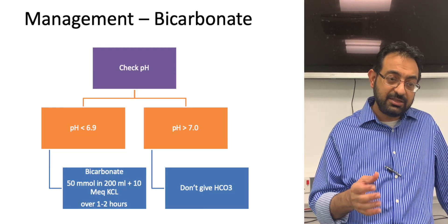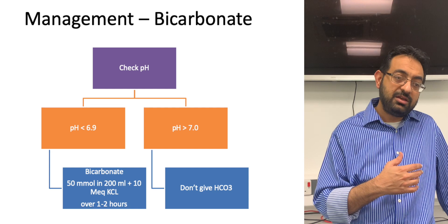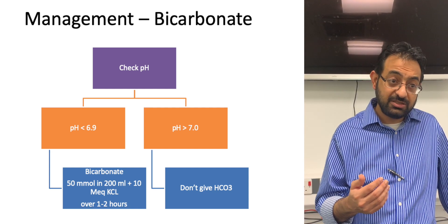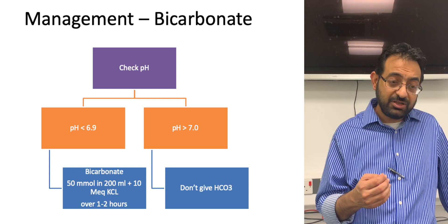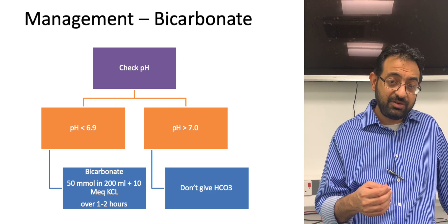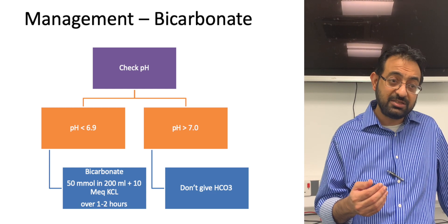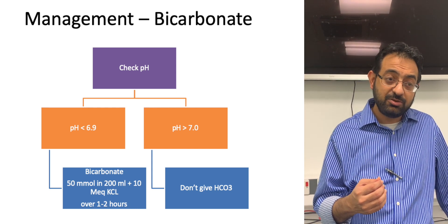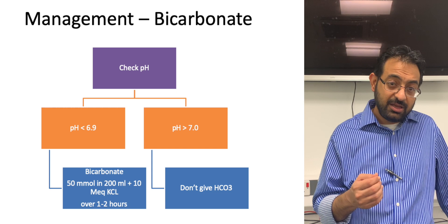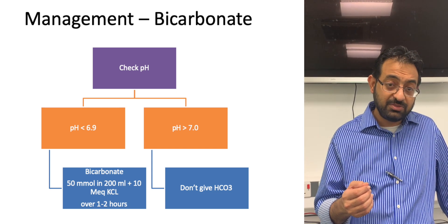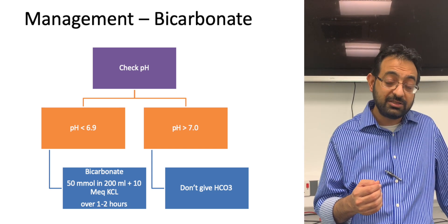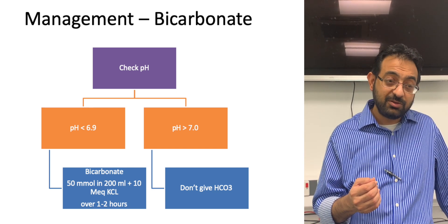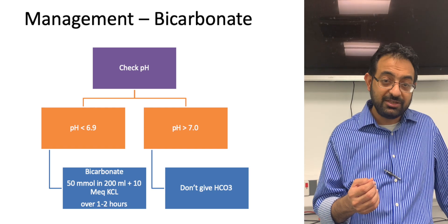While you're correcting the electrolytes, giving the fluids and the insulin, the key thing to keep in mind is how the patient started off. If the patient is severely acidotic — that is, the pH is less than 6.9 — then you should be considering why the patient is not in an HDU or ITU environment, and those teams need to be involved early rather than later. And that's a quick summary of how to manage DKA.